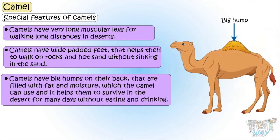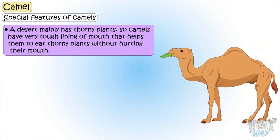Camels have big humps on the back that are filled with fat and moisture, which camels can use to survive in the desert for many days without eating and drinking. The desert mainly has thorny plants, so camels have a very tough lining of the mouth that helps them eat thorny plants without hurting their mouth.